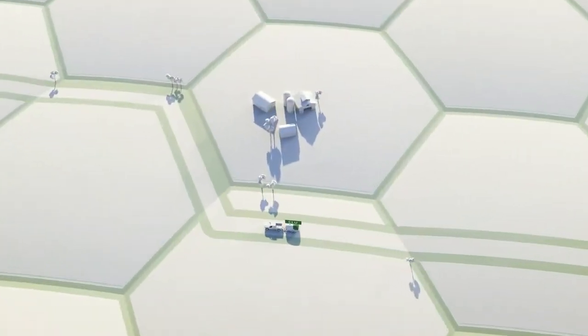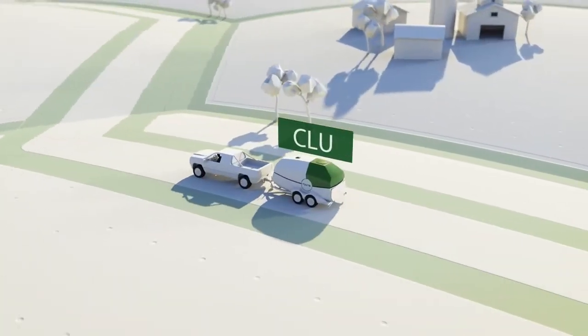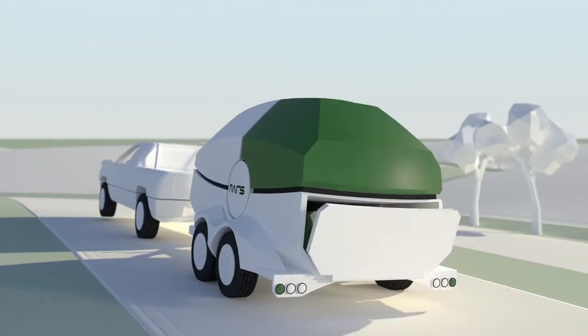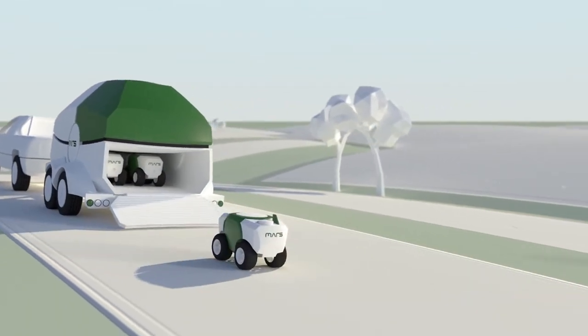Locate the MARS logistic unit next to the field and press Engage. The robot team will now accomplish the planting autonomously.